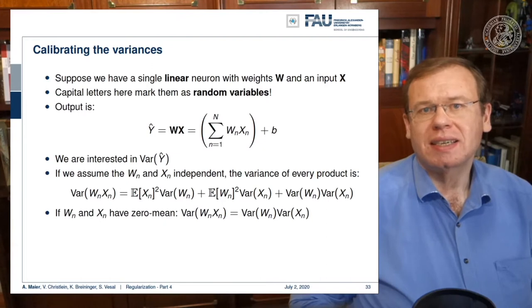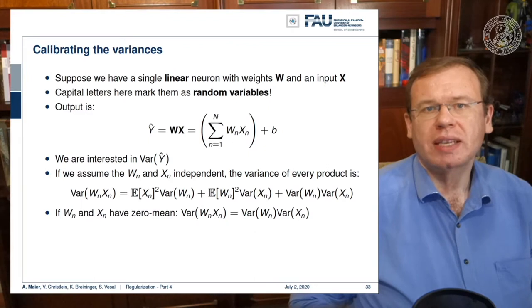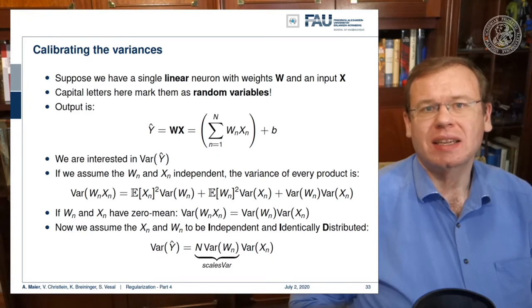Now, if we require X and W to have zero mean, this would simplify the whole issue. The means would be zero, so the expected values cancel out and our variance would simply be the multiplication of the two variances. Now we assume that X and W are independent and identically distributed. In this special case, we can then see that essentially N here is scaling our variances.